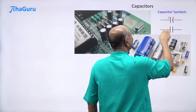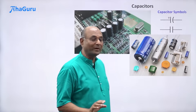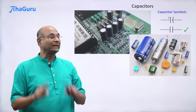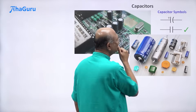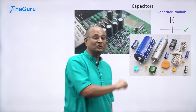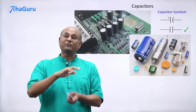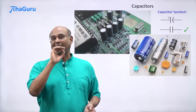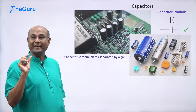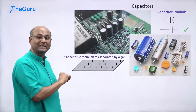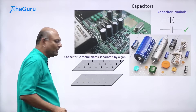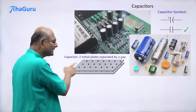We are going to mainly focus on this kind of capacitor — basically two parallel lines. Why is that the symbol? Because most capacitors we use are made up of two flat parallel plates — two metal plates separated by a gap. One plate has charge plus Q and another has charge minus Q, brought close to each other.